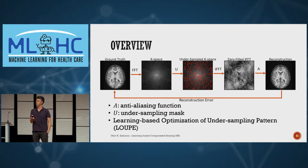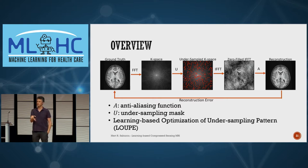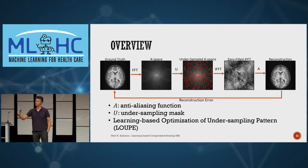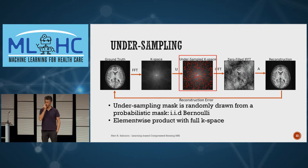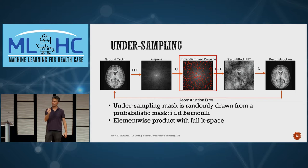This approach generalizes beyond MRI to any compressed sensing context. We relax the problem from integer optimization to continuous optimization by replacing the binary mask with a Bernoulli mask: at every pixel in k-space, we have a potentially biased coin — a Bernoulli variable — and the probability of that Bernoulli variable is what we're optimizing. It's IID across k-space locations. We zero-fill where we don't sample, take the inverse Fourier transform, and then clean up the noise and artifacts.